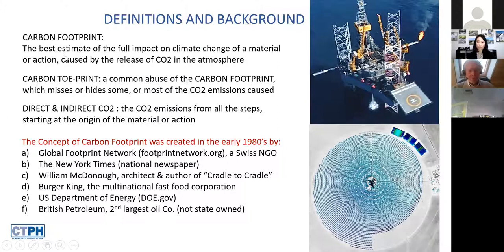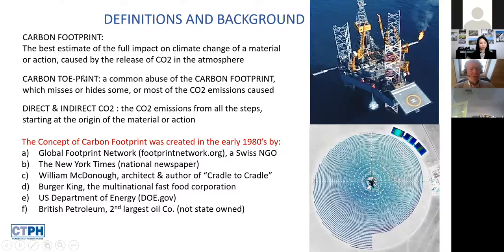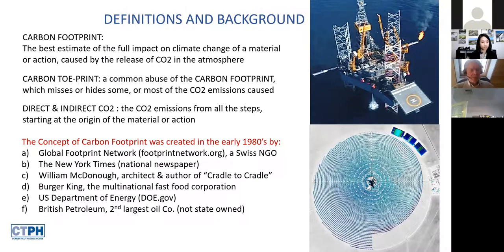The carbon footprint is the best estimate of the full impact of climate change on materials or actions caused by the release of CO2. The opposite, the 'carbon toe print,' is a common abuse of the term because it misses or hides some or most CO2 emissions. The problem is that 'carbon footprint' has suffered the same degradation that the label 'green' suffered 12 to 15 years ago — when everything was green, including Delta Airlines because they recycled soda cans.